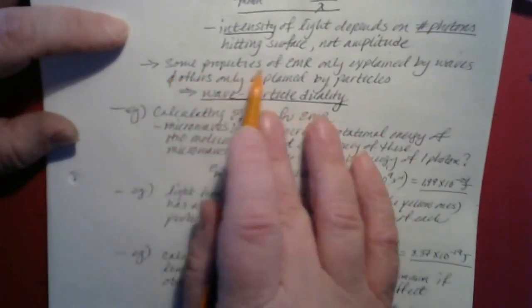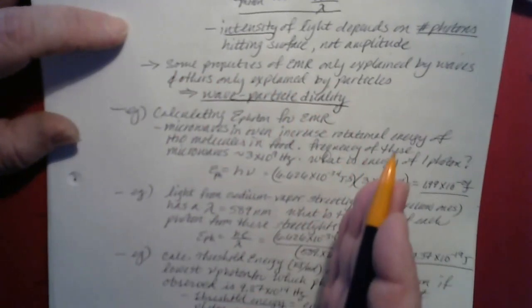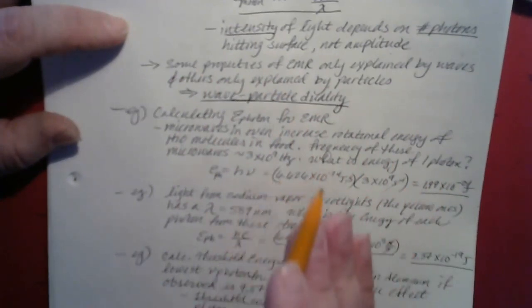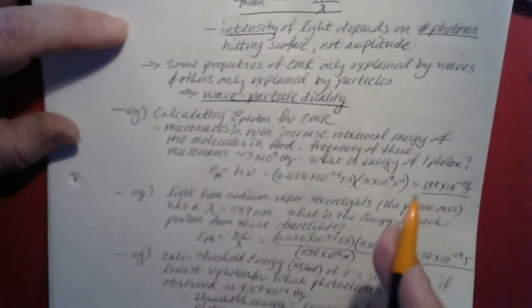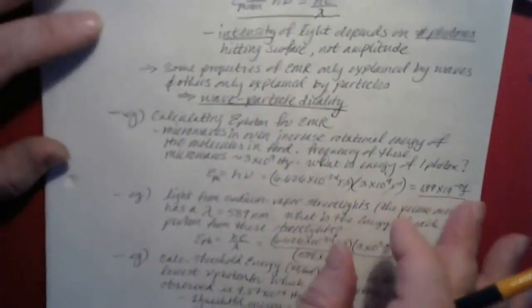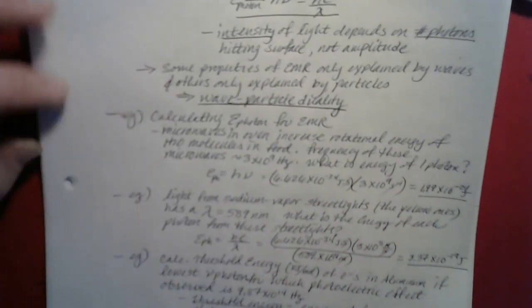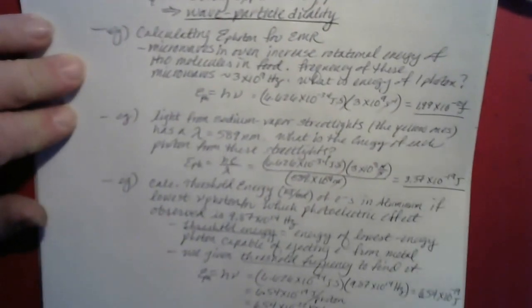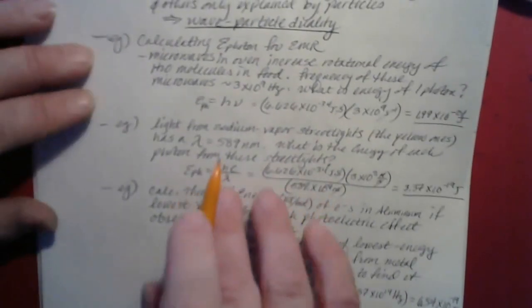Some properties of electromagnetic radiation can only be explained by it being a wave, and other properties can only be explained by it being a particle. That's where wave-particle duality comes from — it has to be both at the same time. That's something difficult to wrap your mind around, because that's quantum mechanics, and quantum mechanics gets really weird really fast. We'll cover just enough to get the basics of atomic structure and electron arrangement.